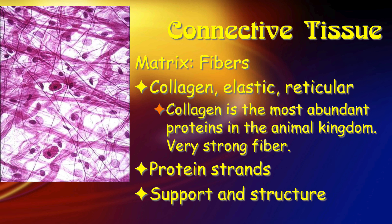What you also see in here are some major ropey-looking things — these are our fibers. The other part of matrix is fibers, and here we're talking about proteins — strand proteins. These are mostly structural elements. The ones we find are collagen, elastic, and reticular fibers, with collagen being the most abundant — and the most abundant in the animal kingdom, for that matter.